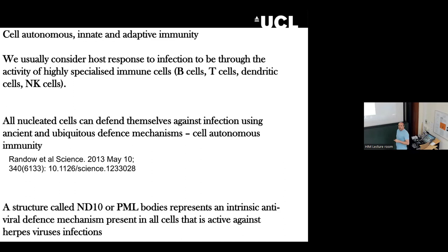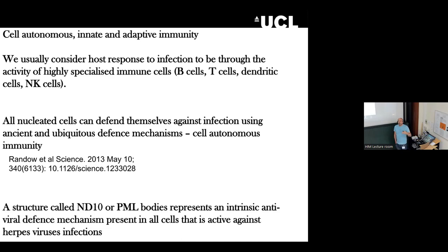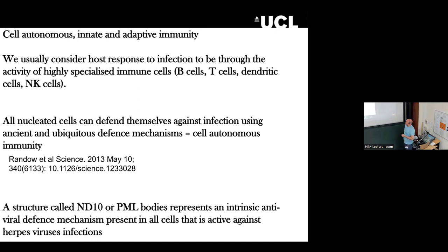What we're particularly interested in is multiple arms of the immune system. There are really three arms: cell autonomous immunity, innate immunity, and adaptive immunity. Adaptive immunity is our B cells and T cells — the learned immunity that is very specific for pathogens. Innate immunity involves things like natural killer cells, which are not specific for a particular virus but recognise virally-infected cells and kill them through non-specific mechanisms. And any cell with a nucleus can defend itself through very old and ancient defence mechanisms encoded by cell autonomous immunity.